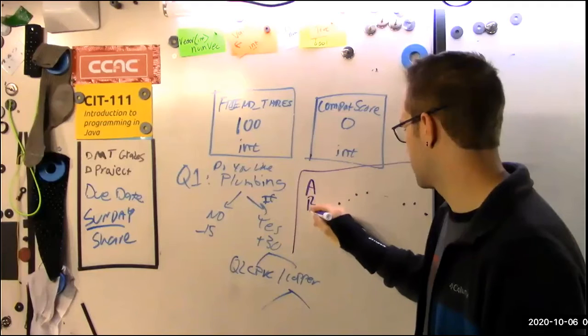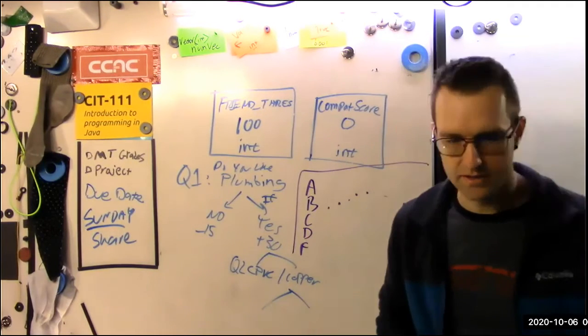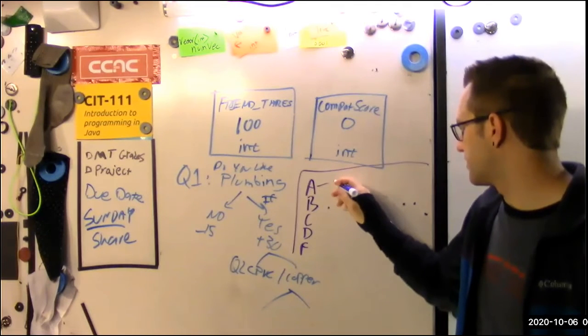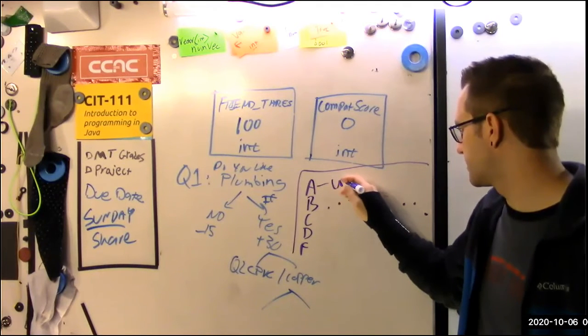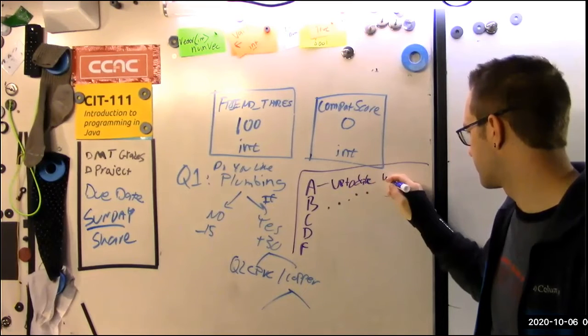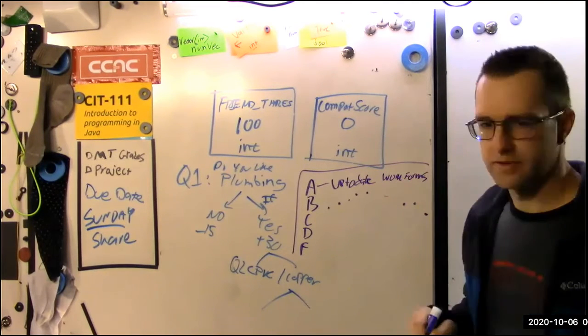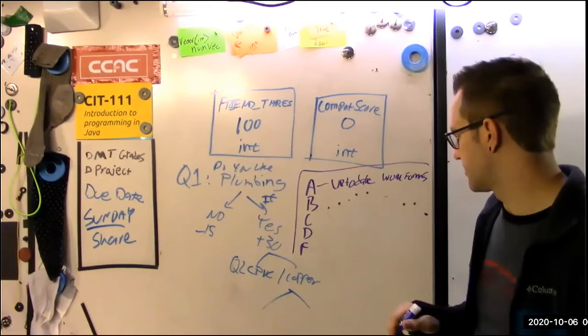So the Community College of Allegheny County declares five possible grade values: A, B, C, D, and F. I will assign A's to folks that are up to date with your weekly work forms. So just are you reporting what you're up to? Are you active? Those are A's.